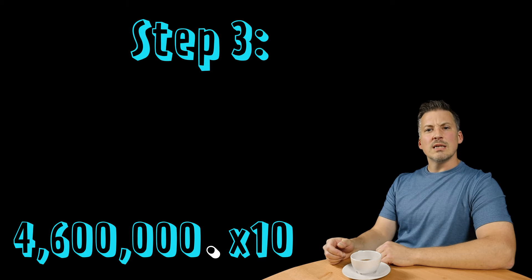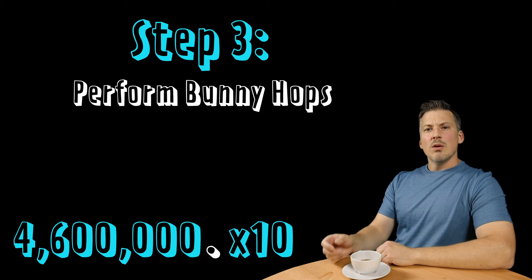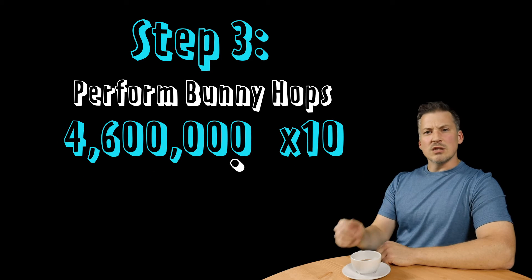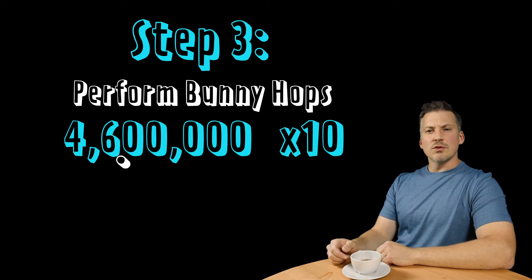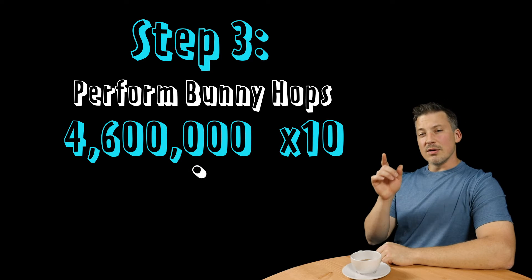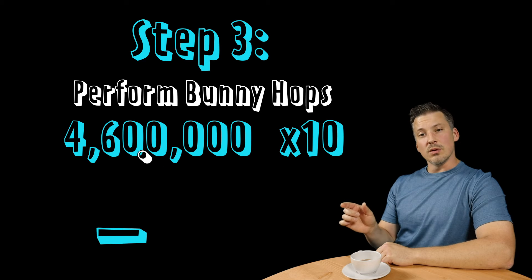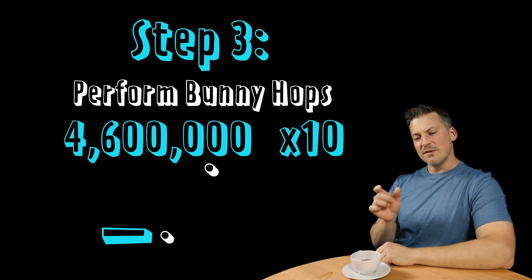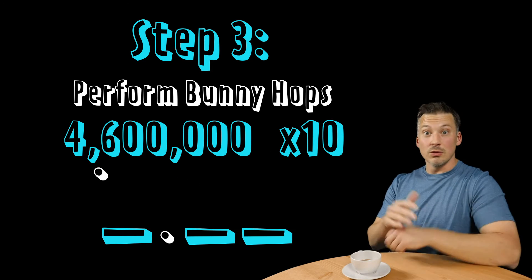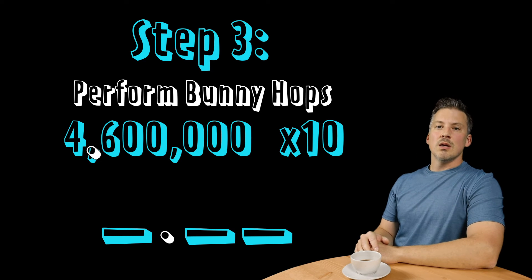Well, step three is what we like to call bunny hops. What you have to do is move the decimal into the proper place for scientific notation. Remember that proper scientific notation has the form of a number followed by a decimal, then followed by however many numbers you like, including no numbers.